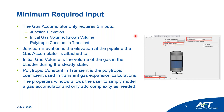Junction elevation is the elevation at the pipeline the gas accumulator is attached to, which you can see here with this dimension line. The initial gas volume is the volume of the gas in the bladder during steady state, and the minimum input for that is a known volume for steady state entered directly. The polytropic constant in transient is the polytropic coefficient used in the transient gas expansion and contraction calculations, and we'll talk about that more a little later.